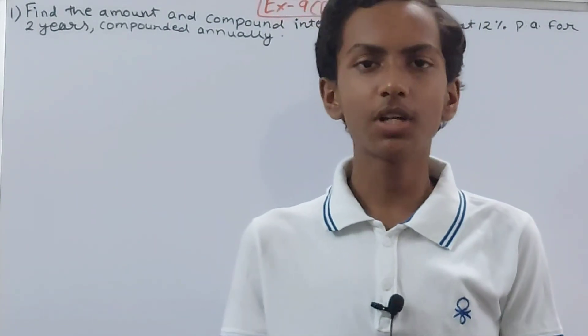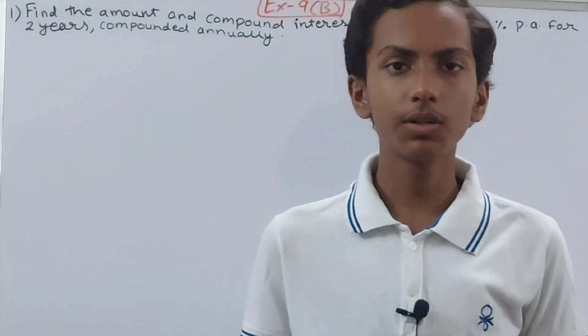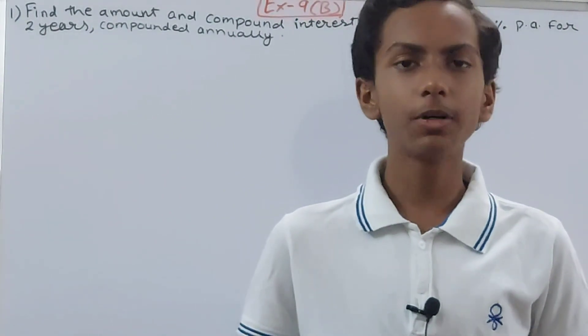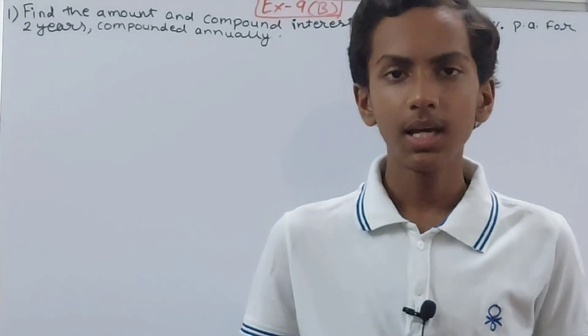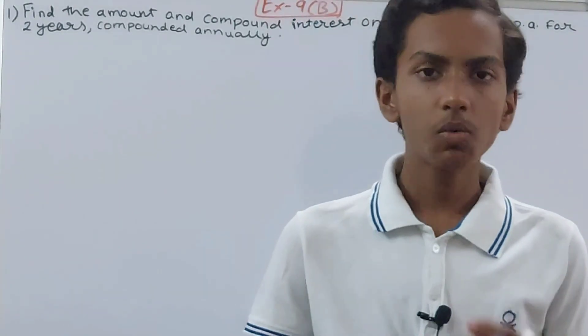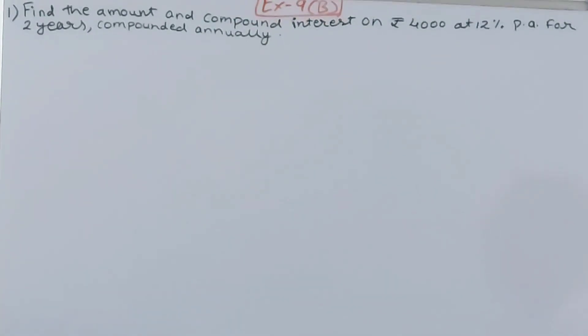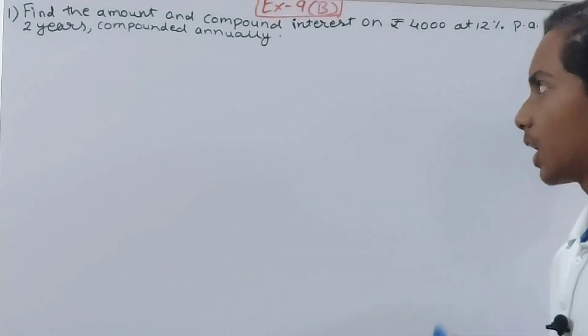Hello friends, welcome back to my YouTube channel, Lock Your Learning. In this video, we are going to solve ICIG Mathematics Class 8, Chapter 9, Simple Interest and Compound Interest, Exercise 9B, Question Number 1. This is: Find the amount and compound interest on rupees 4000 at 12% per annum for two years compounded annually.